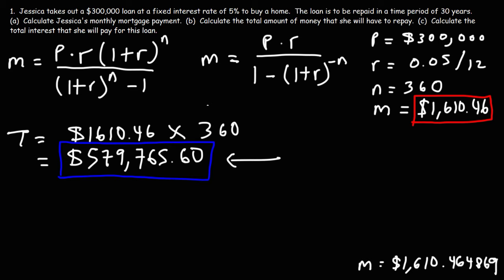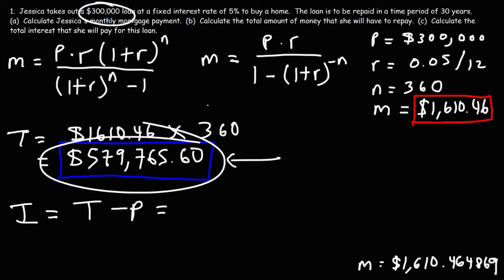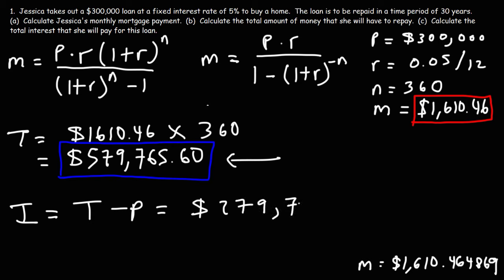So now let's move on to Part C. Calculate the total interest that she will pay for this loan. So how can we do that? How can we calculate the total interest? The total interest paid on this loan over a time period of 30 years is going to be the difference between the total amount of money that she pays minus the principal. So we need to subtract this number by 300,000. So all you need to do is subtract 5 by 3, and you'll get $279,765.60. So that's going to be the total amount of money that she's going to pay in interest over a period of 30 years.